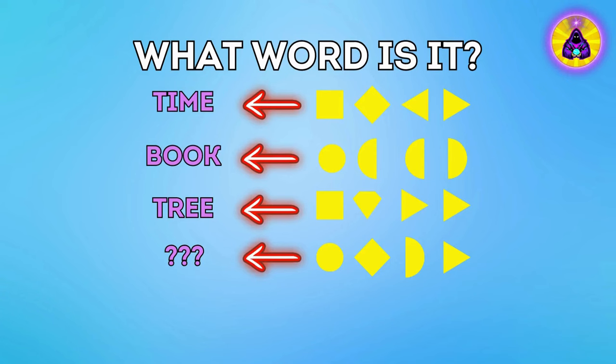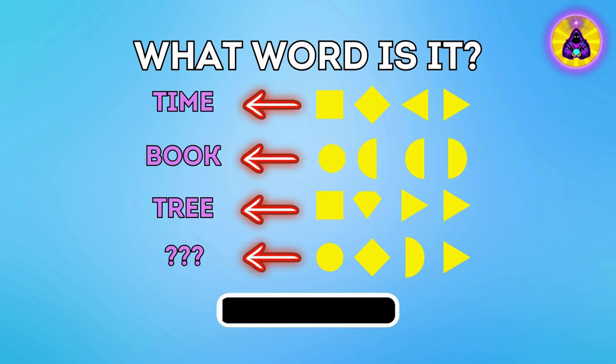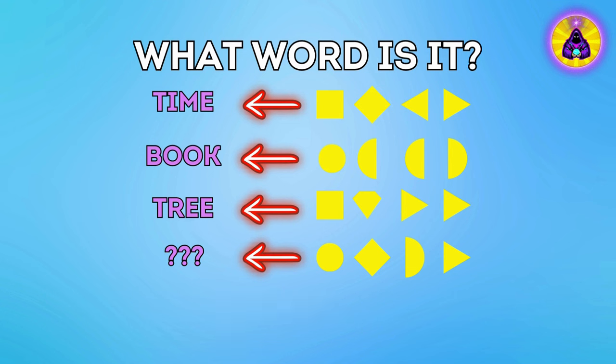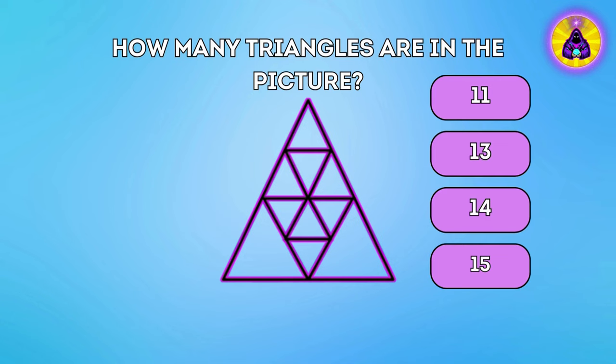Question twenty-four. What word is it? You can see that circle is letter B, rhombus is letter I, right half of bigger circle is letter K, and triangle pointing to the right is letter E. So correct answer is word bike.